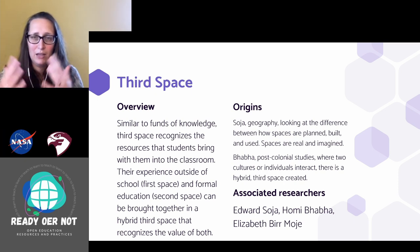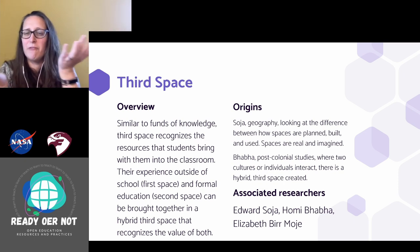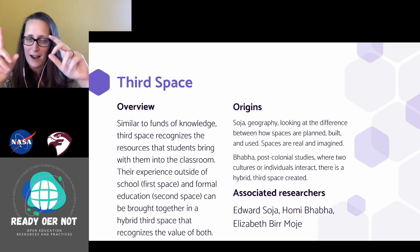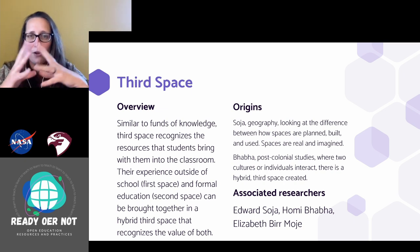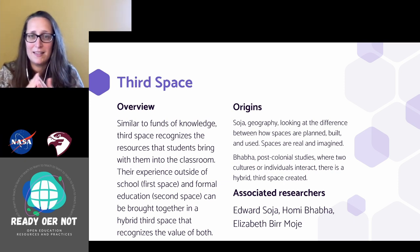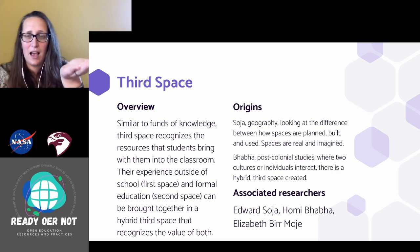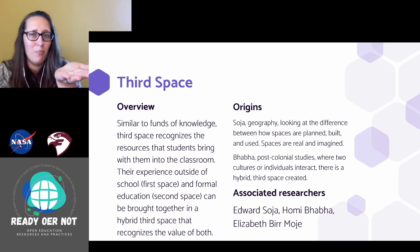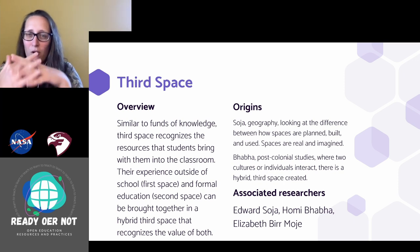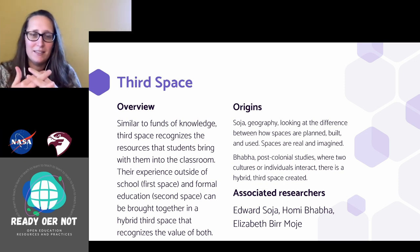Third space looks at when two different cultures interact — it's not that one person is interacting in one only and the other person in the other only. Together they're creating this sort of hybrid third space. In geography, the idea is: this is what the space is like in the real world, this is what it's like in the planned world of blueprints and policies, and this is how the space actually works together — incorporating both real and imagined components.